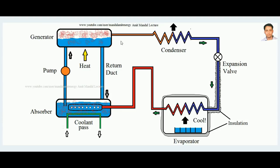This system is also useful for solar refrigeration. In that case, the absorber is kept in a cold area and the generator is kept in a sunny area where sunlight is available — either direct sunlight or focused sunlight via a concentrating arrangement — so that the generator receives enough heat to liberate ammonia from the water. The absorber is kept cool by the coolant pass.